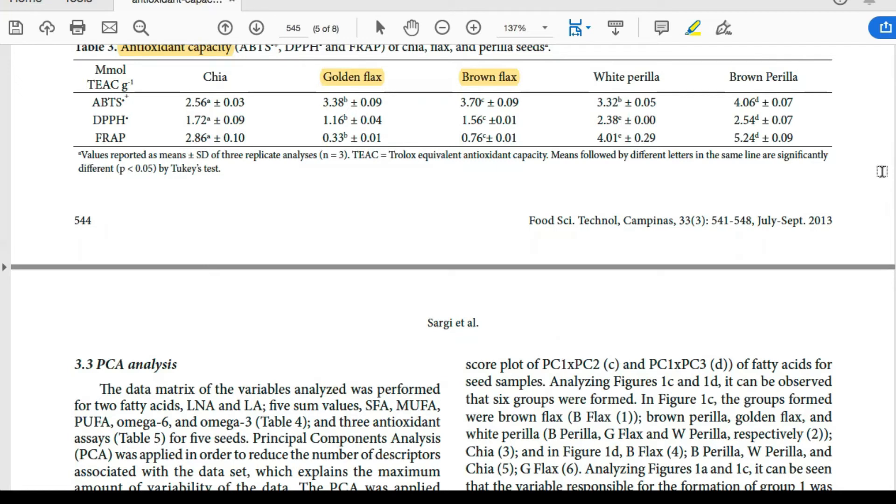So in essence, the nutritional profile of the seed is quite similar, but golden flax is higher than brown flax in omega-3 and omega-6 fatty acids, whereas brown flaxseeds are higher in antioxidants compared to golden flaxseeds.